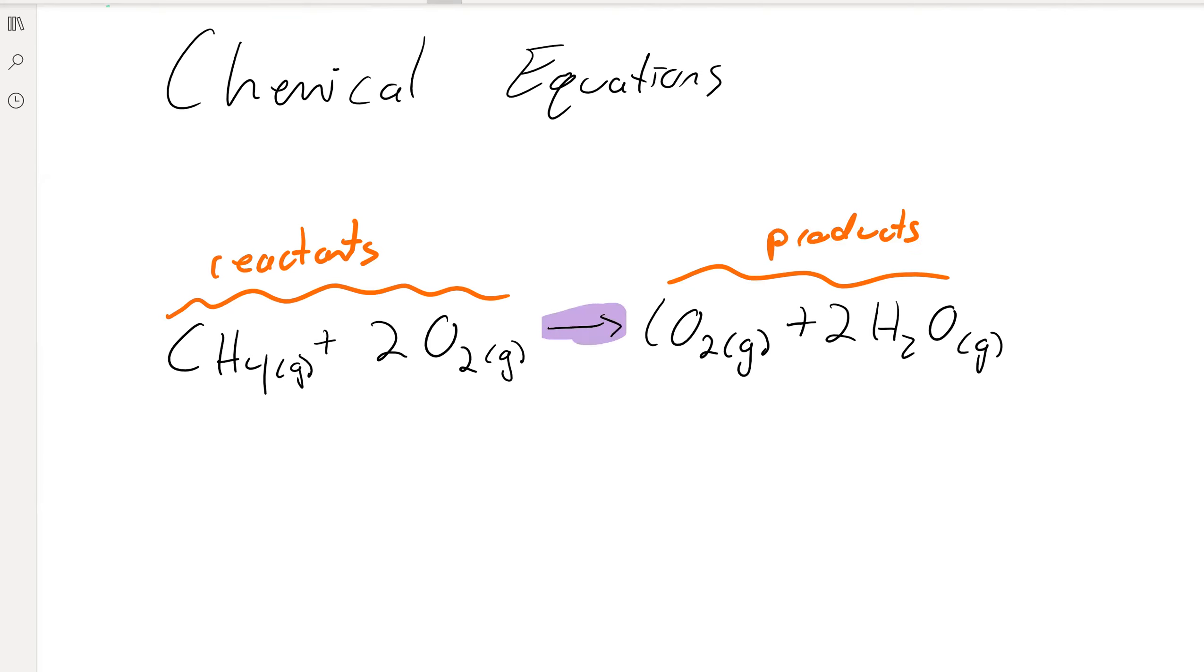And then in the middle we have an arrow. Maybe you notice some other stuff in the arrow, either above or below. Maybe you'll see a triangle sometime—sometimes that just means that you're going to add heat to it.